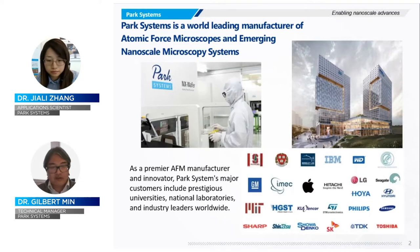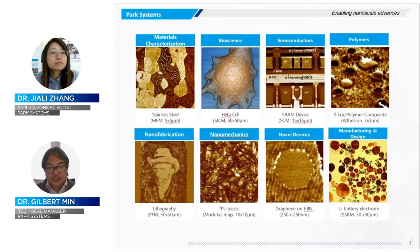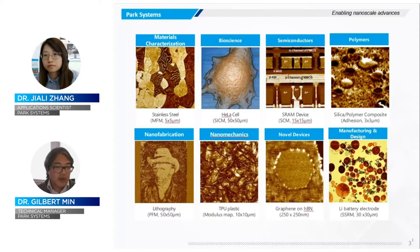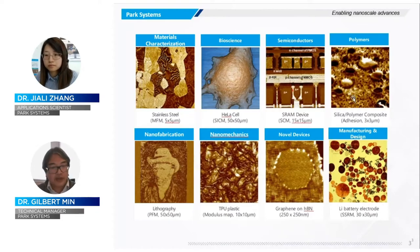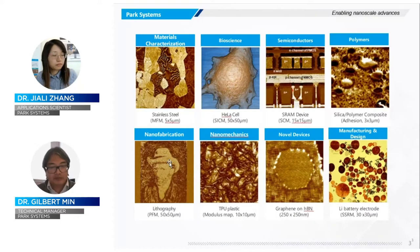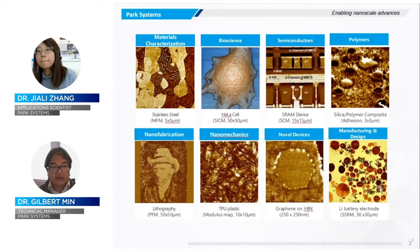We work with a number of major universities, industries, and national laboratories across the world. This is just an example of some of the different materials and applications we handle at Park Systems — everything from material characterization to biophysical behaviors in cellular biology, characterizing semiconductor devices, novel materials like 2D layered materials and polymer composites, nanolithography, nanomanipulation, nanomechanics, and novel materials for battery design.